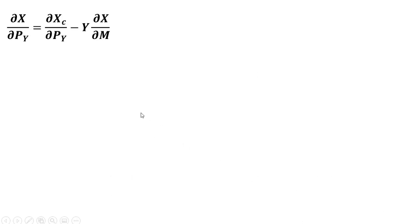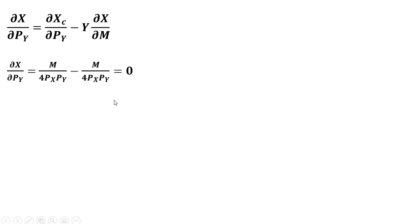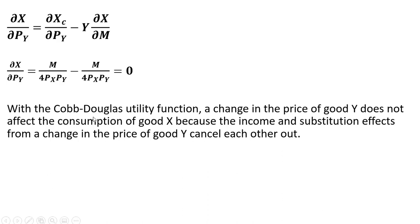Putting it together, the substitution effect and the income effect exactly offset each other. So with a Cobb-Douglas utility function, a change in the price of good Y does not affect the consumption of good X. We just showed that the income and substitution effects are offsetting — they cancel each other out. That's it. I hope you found this video helpful. Thank you.